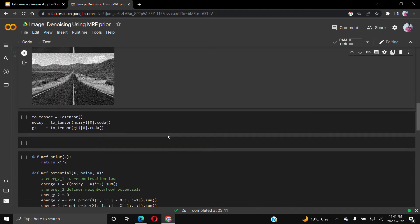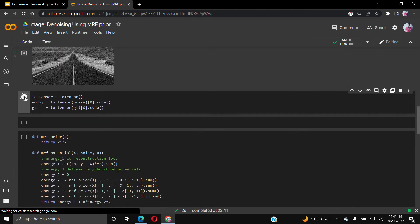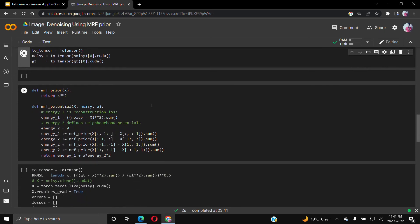We take an objective function as the potential function and prior function. The prior function here we take as a quadratic prior function, and the potential function we take with eight neighbors and calculate the squared error from that.